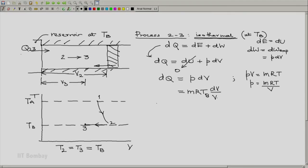Now integrating this, we will get Q2 to 3 equals integral dQ from 2 to 3, which is integral from 2 to 3 of mRTB dV by V. Since m, R, and TB are constants, they can come out of the integral sign, and we will get mRTB logarithm of V3 by V2.